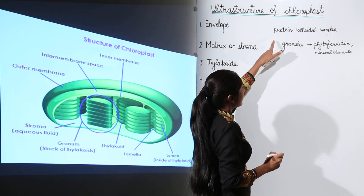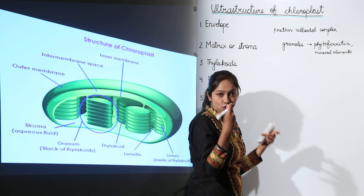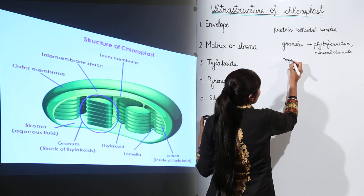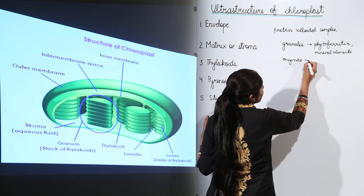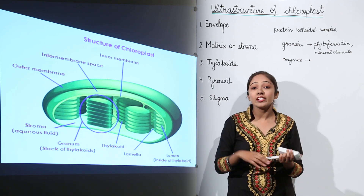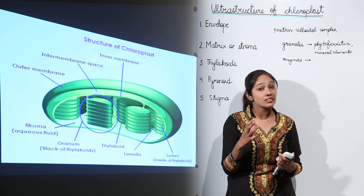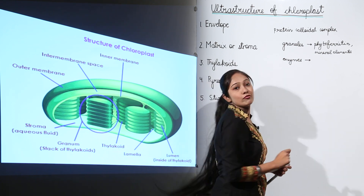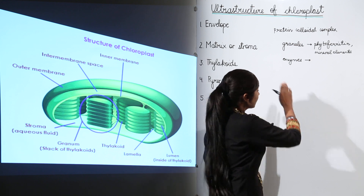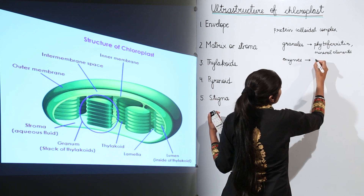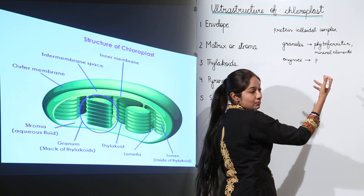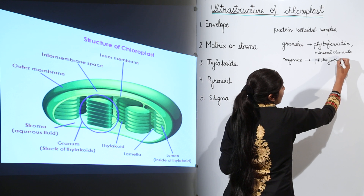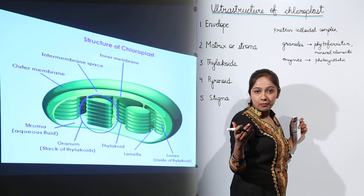Next, this matrix or stroma also contains enzymes. These enzymes are very important for the photosynthesis reaction to occur. The function these enzymes actually perform in the chloroplast is that they help in the synthesis of photosynthetic pigments — the photosynthetic pigment being chlorophyll.